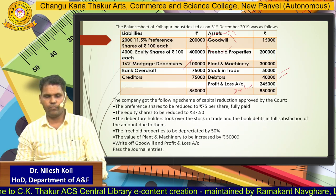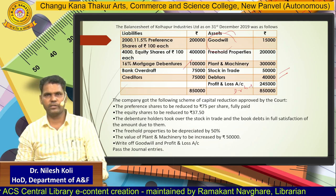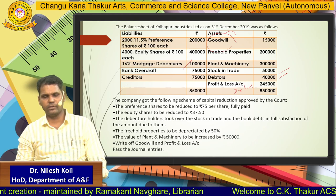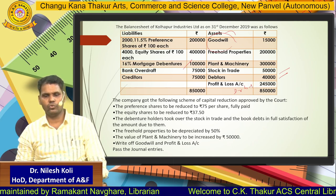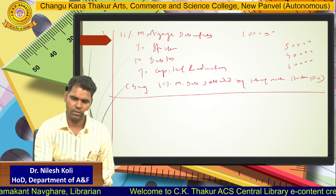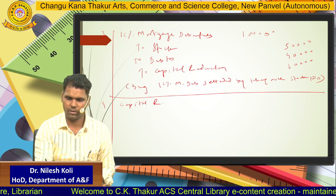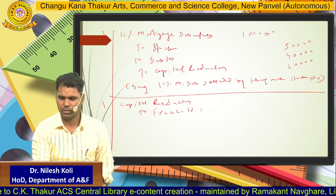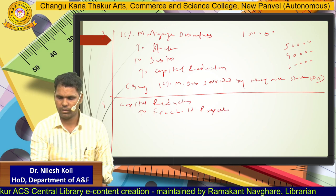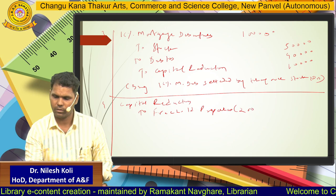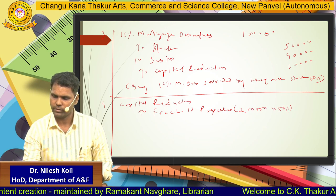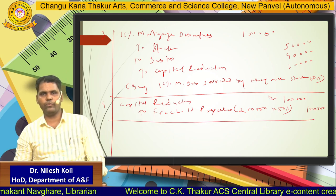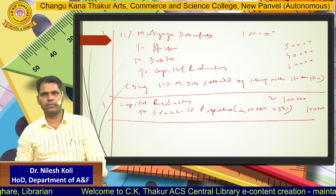Fourth entry: freehold property is to be depreciated by 50%. Freehold property was ₹2 lakh, depreciated by 50% means a reduction of ₹1 lakh. When there is depreciation in an asset, it is a loss for the company, so capital reduction account is debited. Entry: capital reduction account debit to freehold property ₹1 lakh.